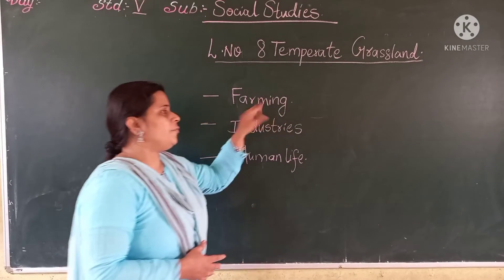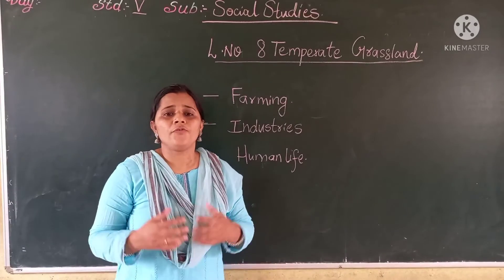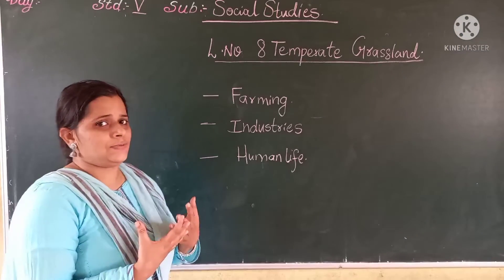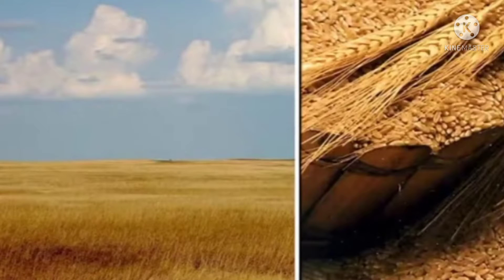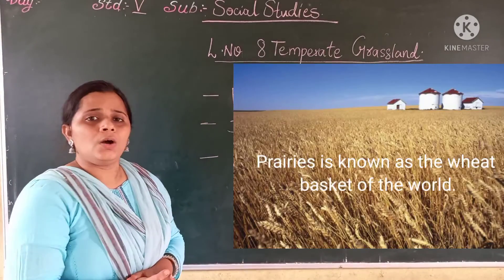Students, first we will talk about farming. In the prairie region of North America, rivers Mississippi and Missouri and their tributaries flow in this region, and hence this makes the grassland soil very fertile. In fertile soil it is very easy to grow crops, so here wheat is grown in plenty, and hence the prairie is known as the wheat basket of the world.